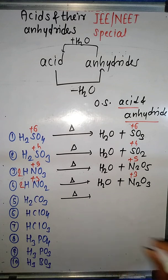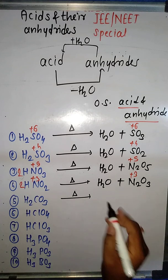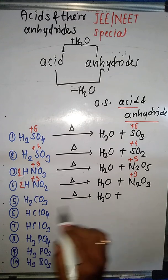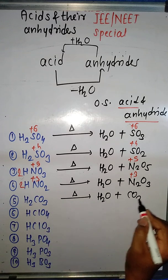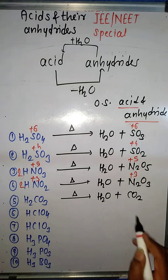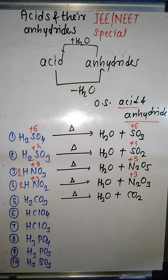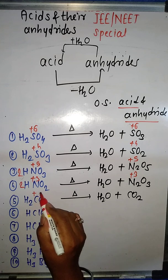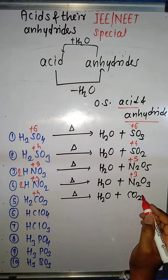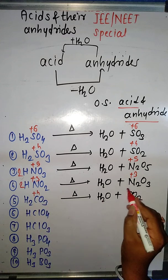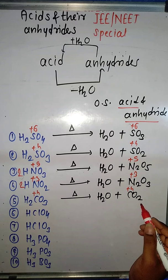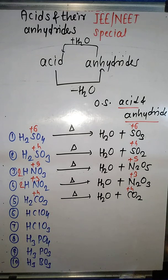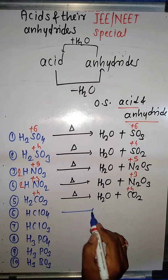Next example is H₂CO₃ (carbonic acid). Heating with a strong dehydrating agent knocks out H₂O, and what's left behind is CO₂. The oxidation state of carbon in H₂CO₃ is +4, and in CO₂ it is also +4. So carbon dioxide is the anhydride of carbonic acid.